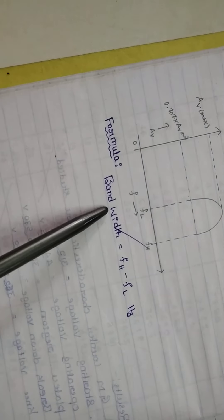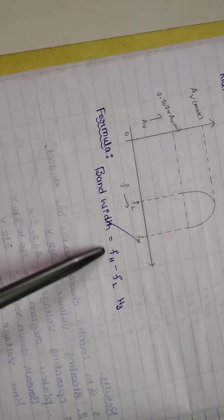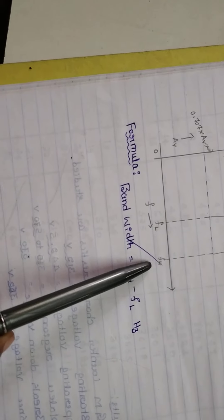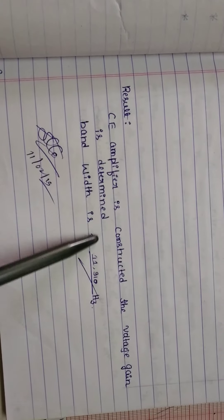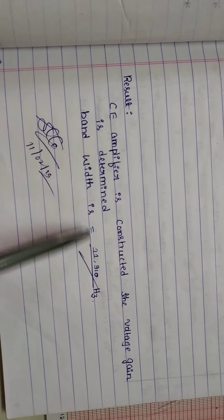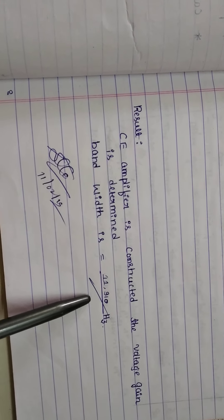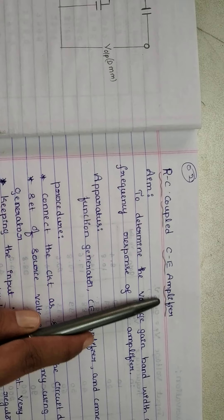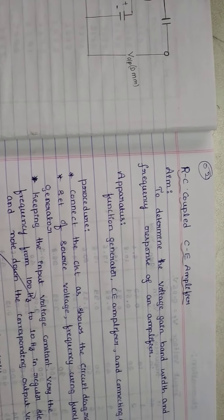The bandwidth formula is: Bandwidth = F-H minus F-L, that is high frequency minus low frequency. The result is that the CE amplifier is constructed, the voltage gain is determined, and the bandwidth value is noted in hertz. This is the RC coupled CE amplifier experiment. Thank you.